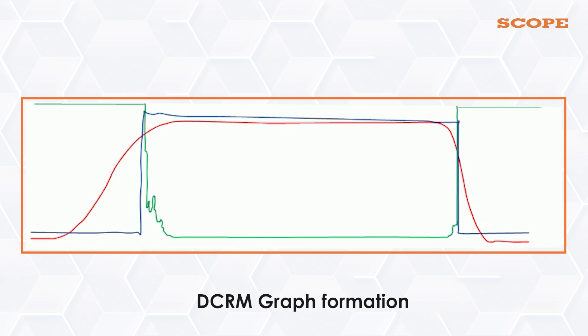For meaningful and in-depth analysis of the DCRM signature, it is recommended to have the travel curve of the circuit breaker along with the DCRM curve.